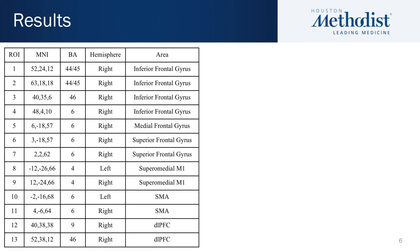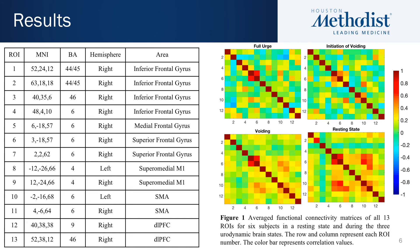We computed the functional connectivity maps of all 13 ROIs during full urge, initial voiding, voiding, and resting states. The rows and columns represent each ROI number.